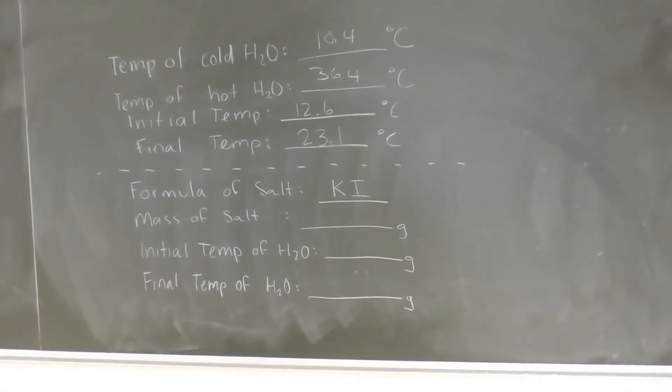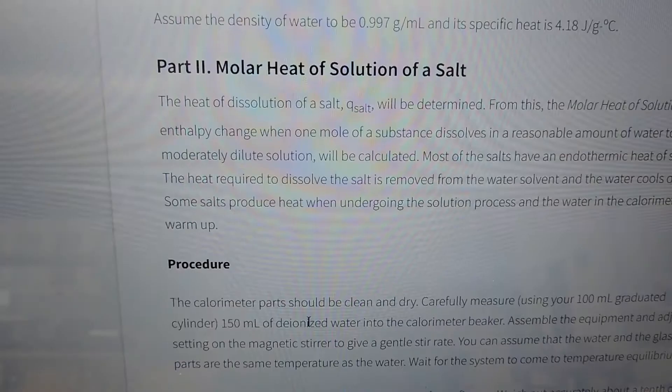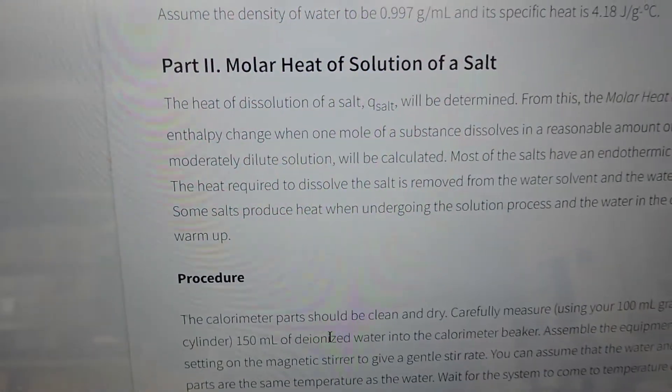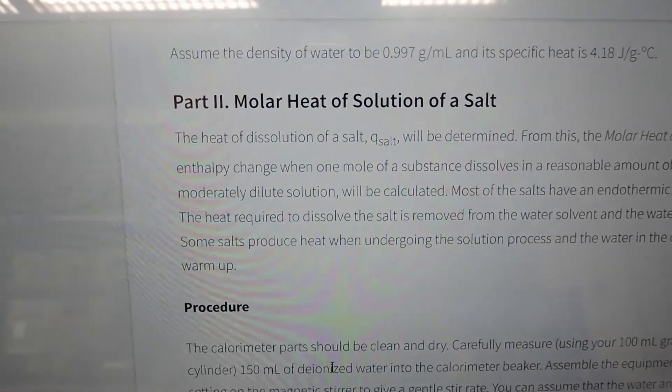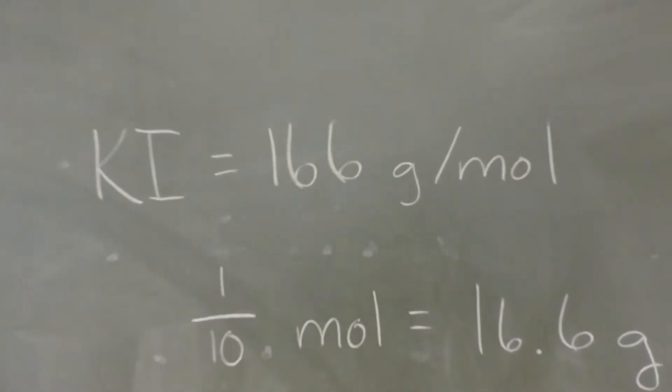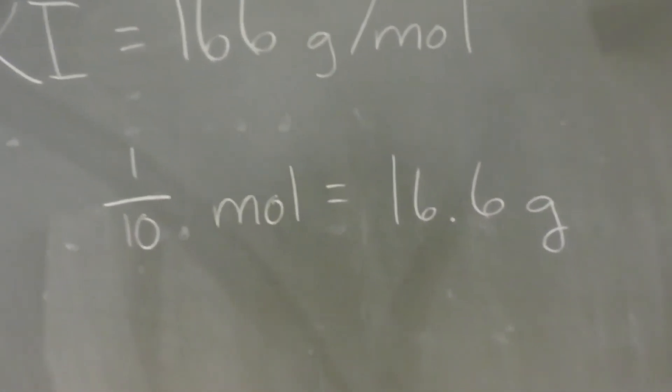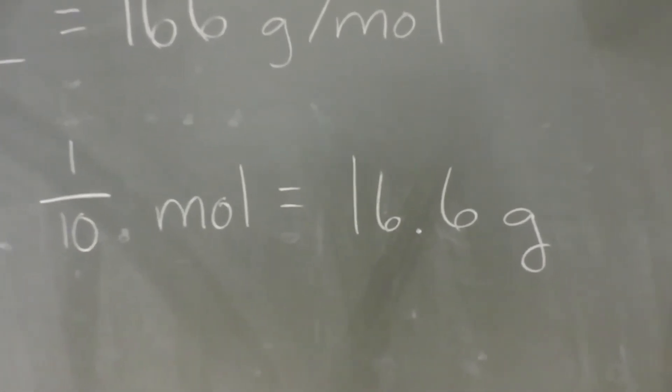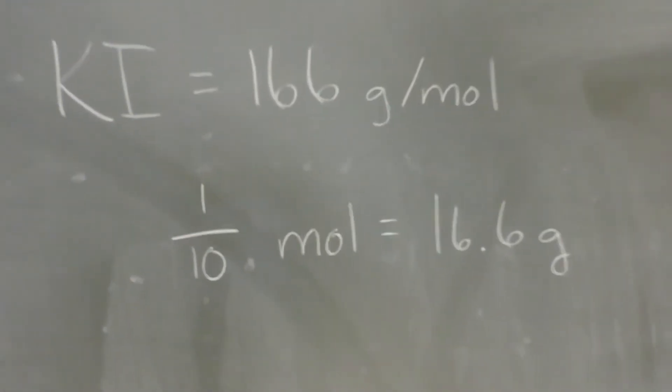Next, we'll work with some potassium iodide. For part two of the experiment, we're going to work with the molar heat of solution of a salt. For this, we need a tenth of a mole of potassium iodide. Potassium iodide weighs 166 grams per mole, so one tenth of a mole is going to be equivalent to 16.6 grams, which is also 100 millimoles.